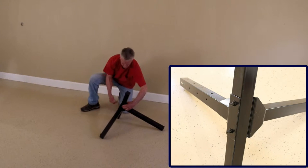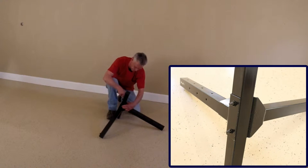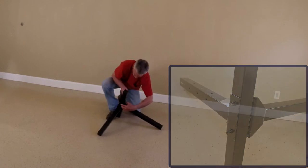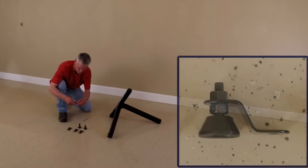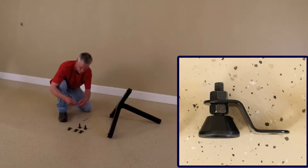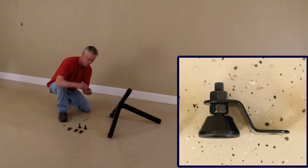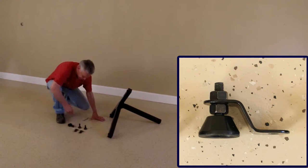Tilt the base on its side to easily tighten the nuts on the carriage bolts. Twist the first nut all the way onto the leveling foot for easy leveling adjustment later.